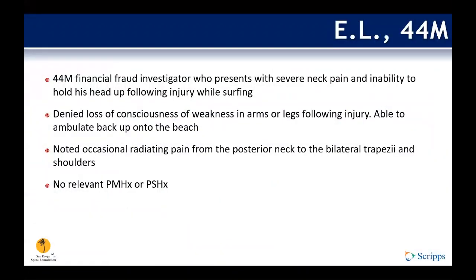This is patient E.L., a 44-year-old financial fraud investigator who was in San Diego for a vacation with his family. He presented with severe neck pain and inability to hold his head up following a surfing injury. The surfboard came out from under him and hit him in the back of the neck. He denied loss of consciousness or weakness in his arms or legs, and was able to ambulate back up onto the beach by himself. He noted occasional radiating pain from the posterior neck into the bilateral trapezii and posterior shoulders, not distal to the shoulders or elbows. He has no significant past medical or surgical history.